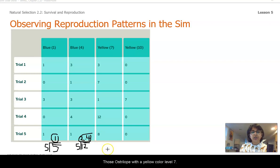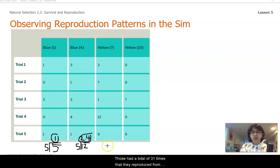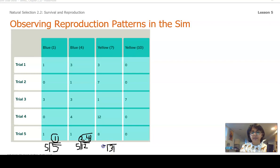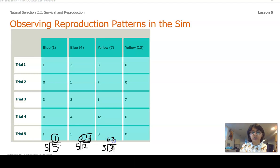Those Australopes with a yellow color level seven had a total of 31 times that they reproduced from what we saw following along with me in the simulation, but we want the average. So we're dividing that by five, and we get an average for yellow seven Australopes to be 6.2.